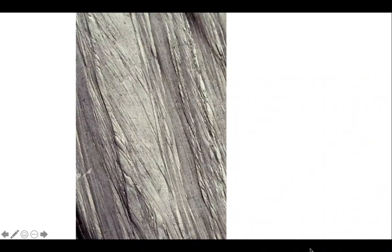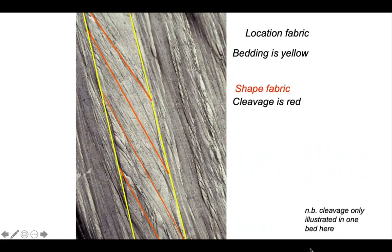Let's apply this to a natural example. Let's pick out the bedding and the cleavage in these sandstone-siltstone couplets. The cleavage is in red, the bedding is in yellow. We're only illustrating this in one bed for clarity. Notice the asymmetry.